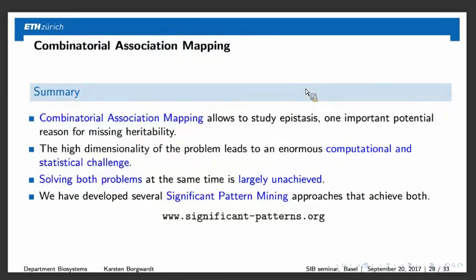To summarize the entire talk: combinatorial association mapping allows one to study epistasis — SNP-SNP interactions — one important potential reason for missing heritability. The high dimensionality leads to enormous computational and statistical challenges; solving both at the same time was largely unachieved in the past. We have developed several significant pattern mining approaches that achieve both these goals. If you want to read more, download our papers, presentations, and code at significant-patterns.org.